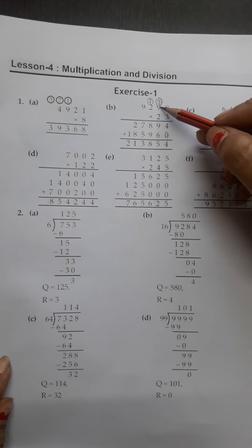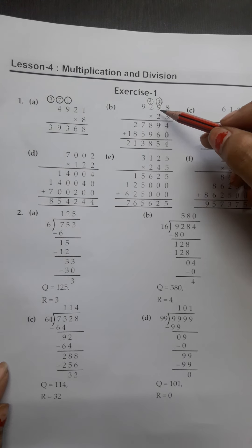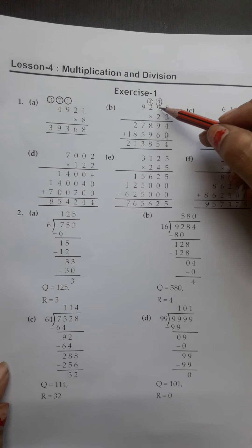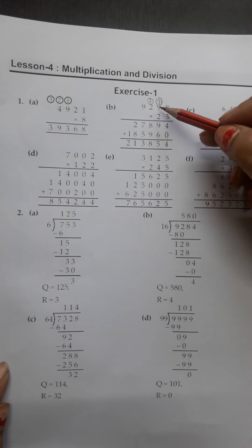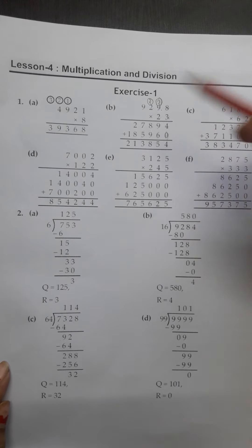Next we multiply by 2. 2 eights are 16. 2 nines are 18, plus 1 equals 19. 2 twos are 4 plus 1 equals 5. 2 nines are 18.